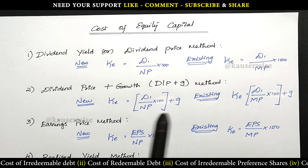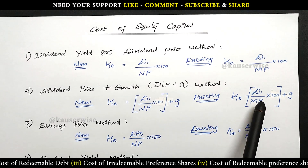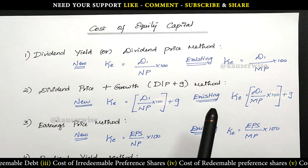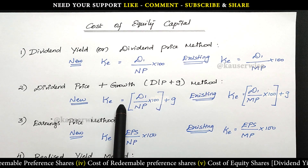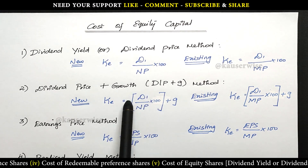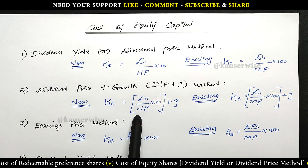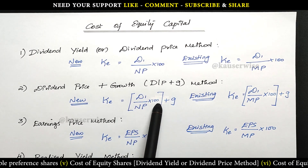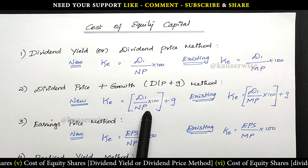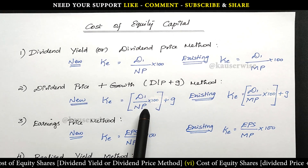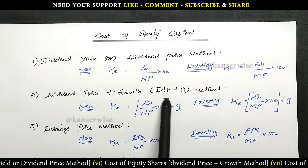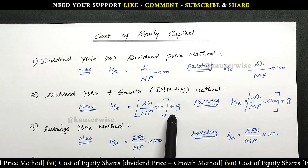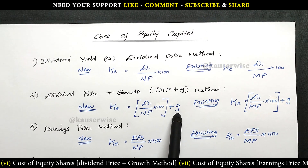Under the dividend price plus growth method we have two different formulas. The first formula is for new shares and the second formula is for existing shares. According to this method, KE (cost of equity) is equal to D1 (dividend per share) divided by NP (net proceeds per share) into 100. This is the same formula as the dividend yield method, but here we add the growth rate G. So the formula becomes the previous formula plus G, where G refers to the growth rate — this will be given in the problem.